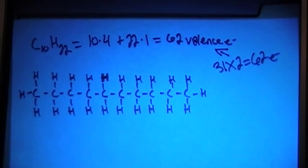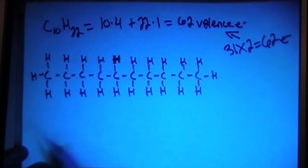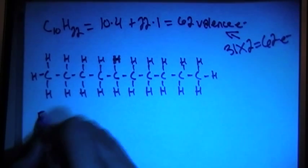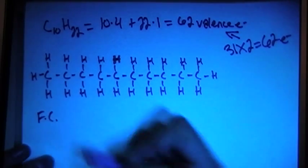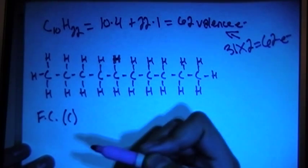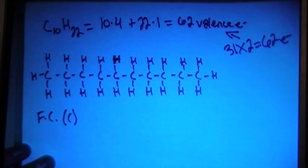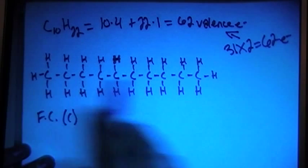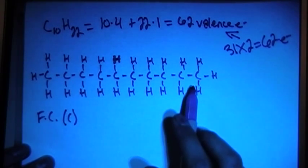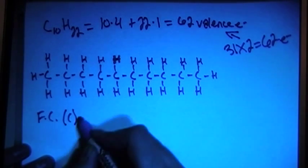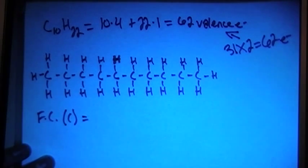Okay, so this should be the right structure. We can go ahead and verify it by checking the formal charges on each of the atoms. So we can start with the carbon, the carbon formal charges, and if you notice, each carbon in here has 4 bonds and 0 non-bonding electrons. So the formal charge of each of them should be equal to each other.